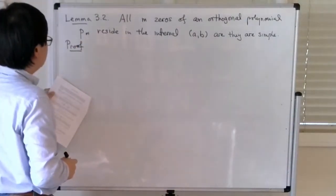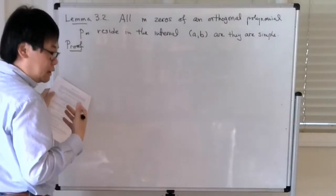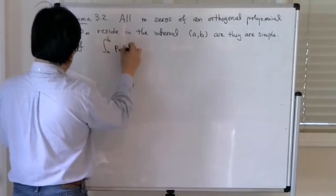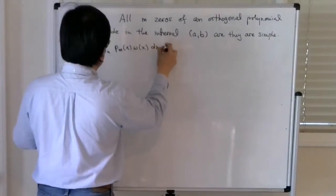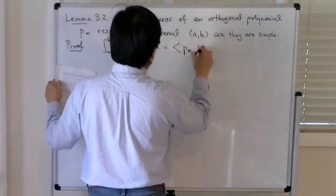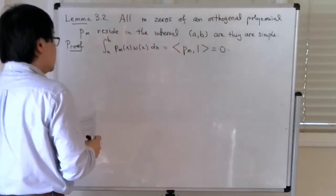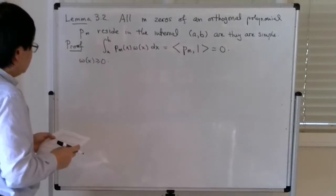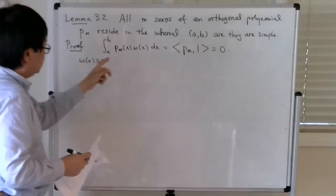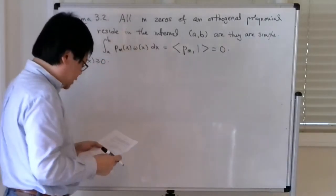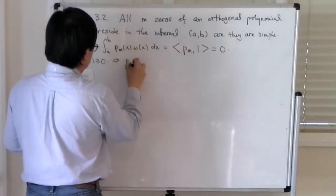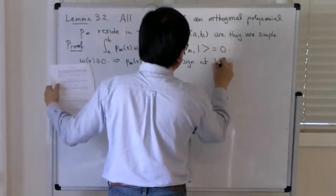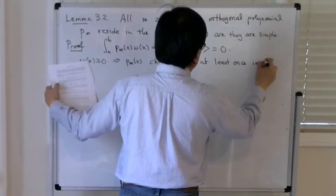The first observation is that p_m, as an orthogonal polynomial, is orthogonal to the constant function. So the integral from a to b of p_m(x) w(x) dx — which is the inner product between p_m and 1 — is equal to 0. Since w(x) is non-negative, this implies that p_m(x) must change sign at least once in the interval [a, b].